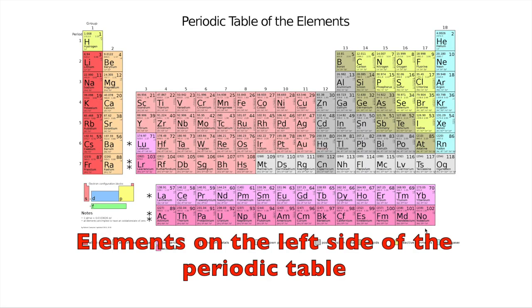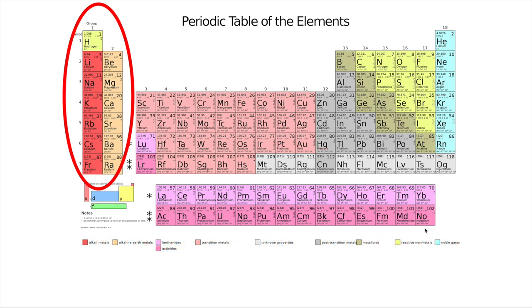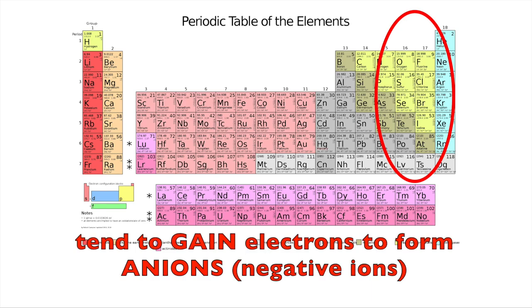In general, elements on the left side of the periodic table tend to lose electrons to become cations or positive ions. Elements on the right side of the periodic table tend to gain electrons to form anions, also called negative ions.